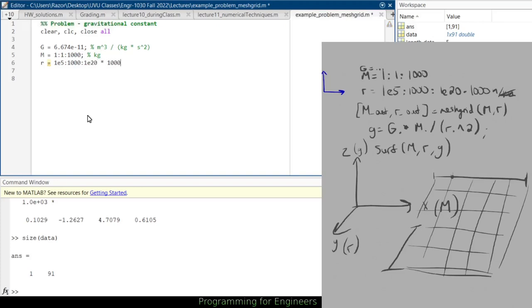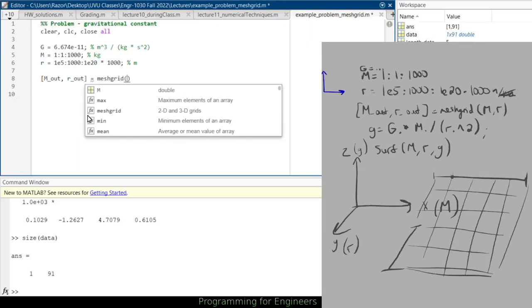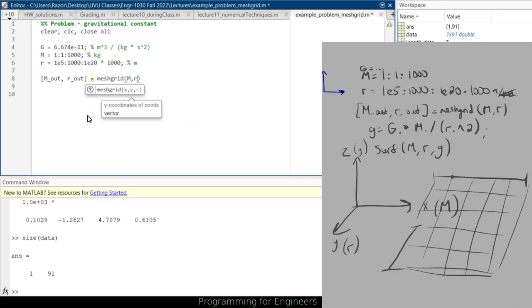And this multiplied by 1000 for my meters. Then I've got m out, r out, equals mesh grid of m, r.